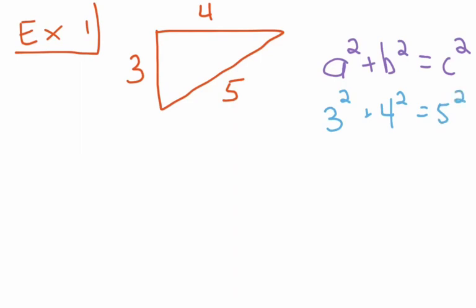So we're going to have 3 squared plus 4 squared equals 5 squared. So what we're going to do is we're going to square these numbers. We'll add the products together on the left side. And if the numbers end up being equal, then this is a right triangle. If the numbers are not equal, then it's not a right triangle. Let's take the next step.